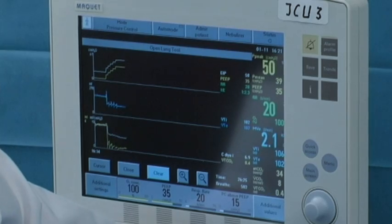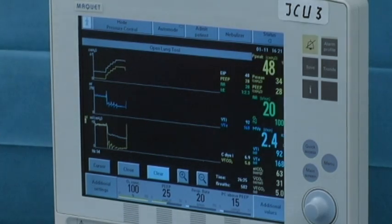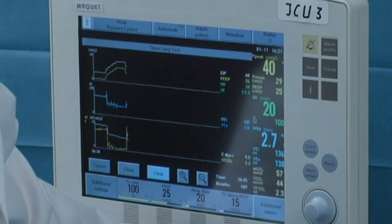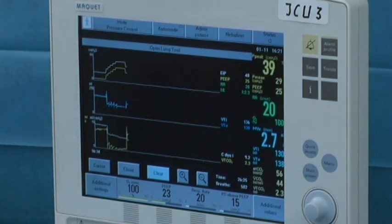After opening the lung, PEEP titration is commenced at 20 to 25 cm of water. The higher level is used for higher recruitment pressures. PEEP is lowered in steps of 2 cm of water until dynamic compliance decreases. This point is referred to as the collapsing point.